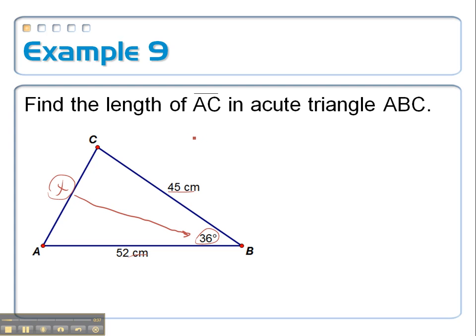So when I set this up, X squared will be equal to A squared, 45 squared, plus B squared, 52 squared, minus 2 times, and it's the same two sides, times 45, times 52, times the cosine of the angle that is opposite the side I'm squaring, which is 36.